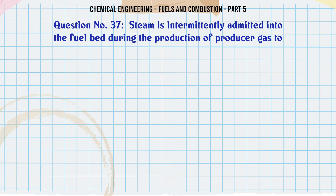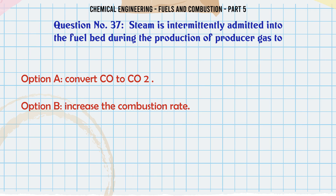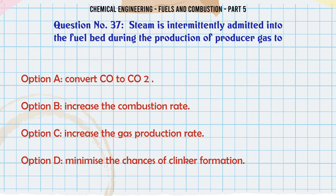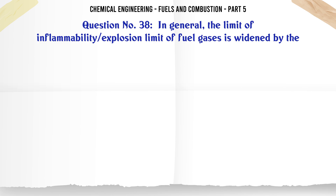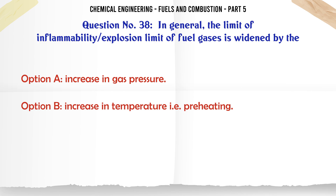Steam is intermittently admitted into the fuel bed during the production of producer gas to: A. Convert CO₂ to CO. B. Increase the combustion rate. C. Increase the gas production rate. D. Minimize the chances of clinker formation. The correct answer is minimize the chances of clinker formation.